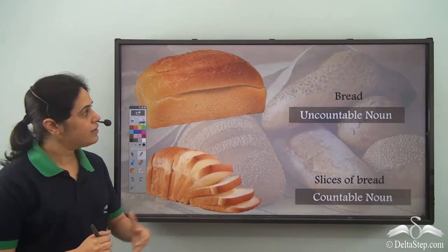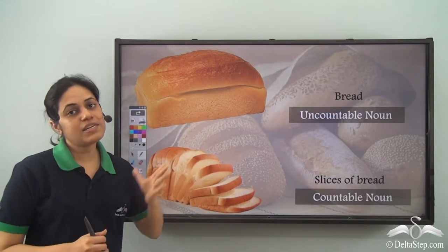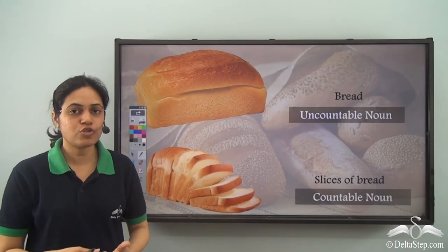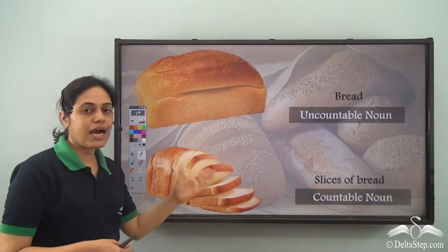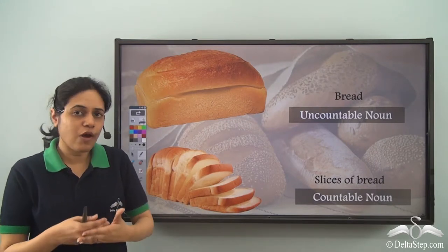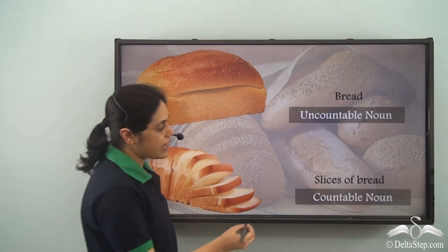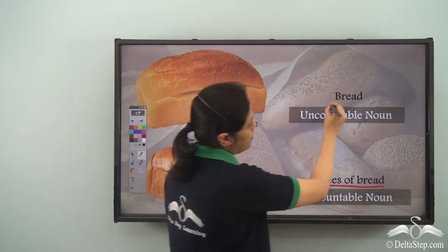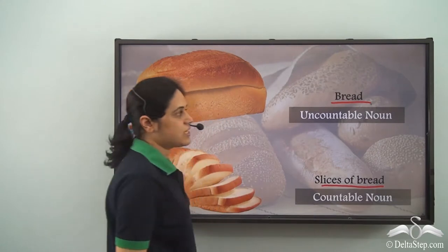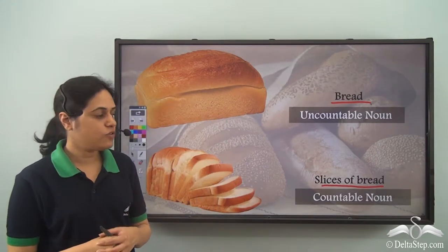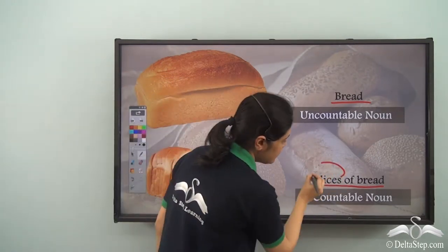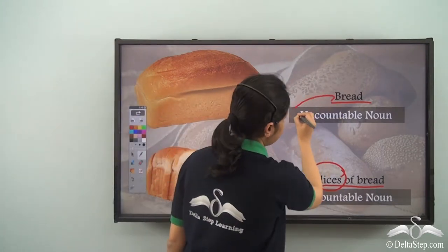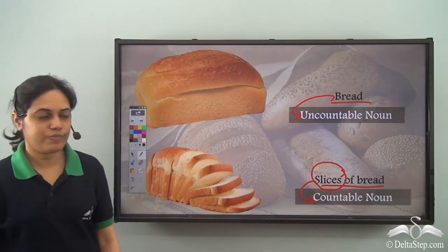Similarly, bread itself is an uncountable noun. We never say 'I have one bread, two bread.' But when we cut bread into slices, we can count those slices. So, slices of bread are a countable noun whereas bread is an uncountable noun.